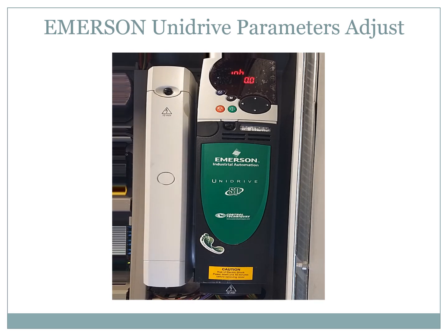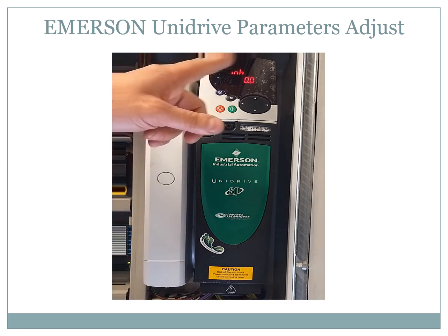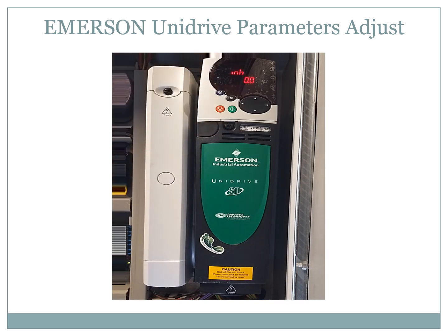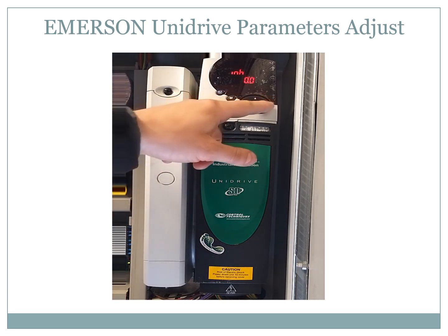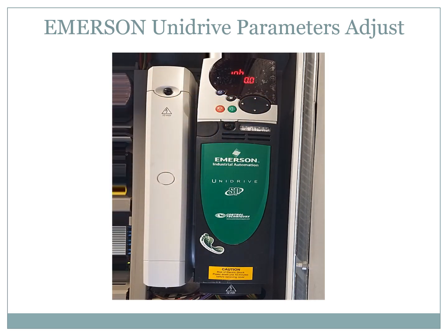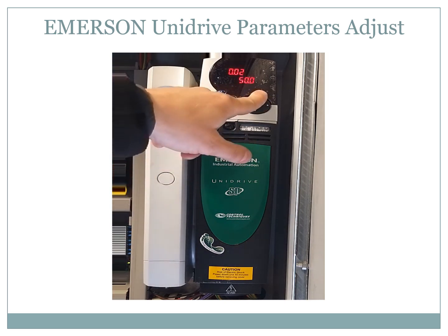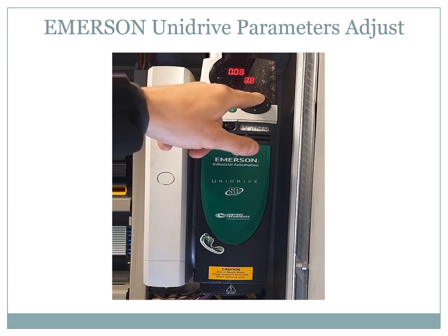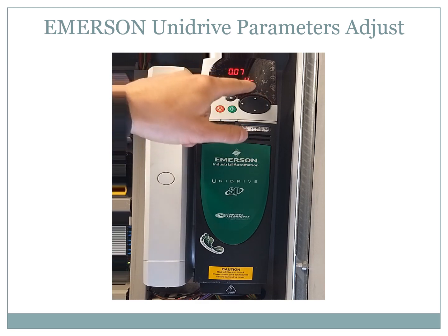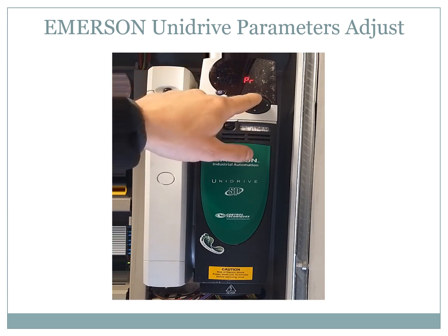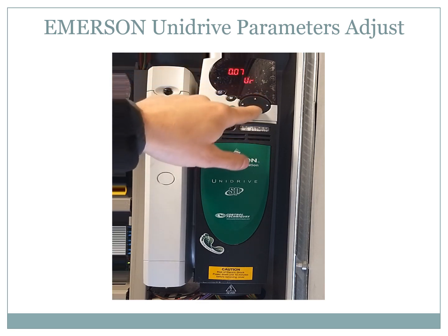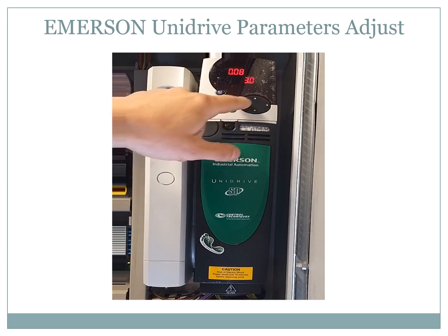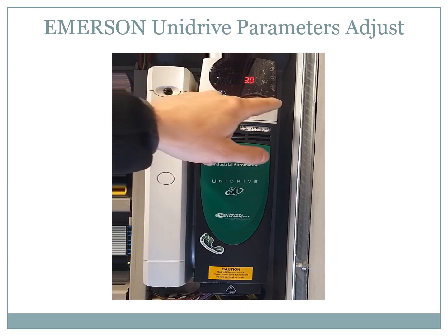This is the normal state of the inverter as you can see here. To scroll to the parameters we will use these push buttons — up and down to change the parameter number, and left and right to change the page of the parameters.